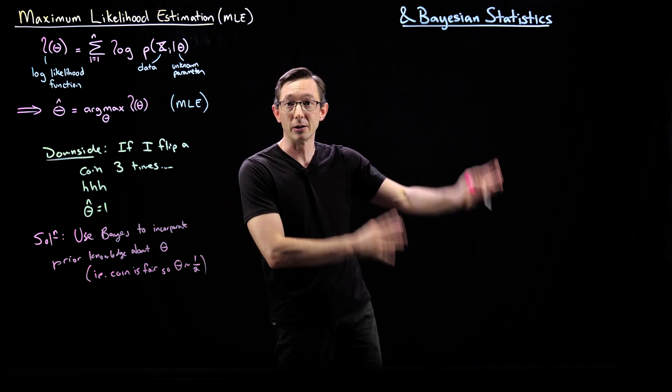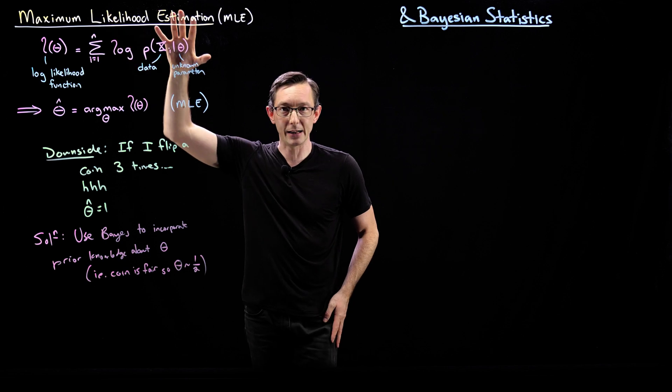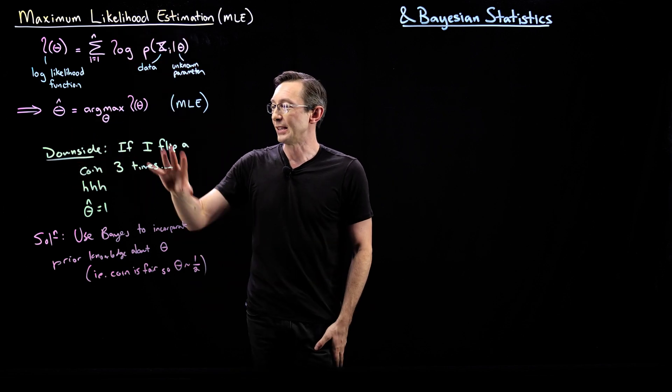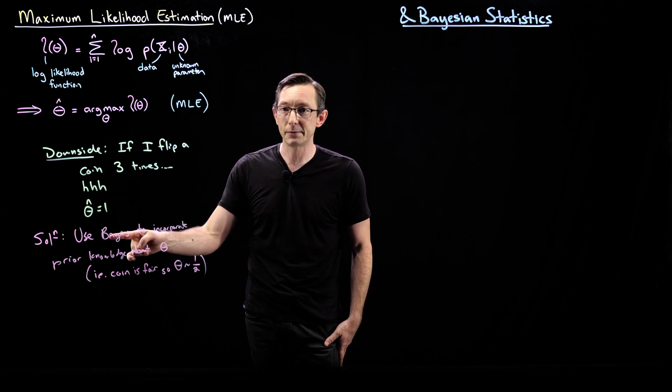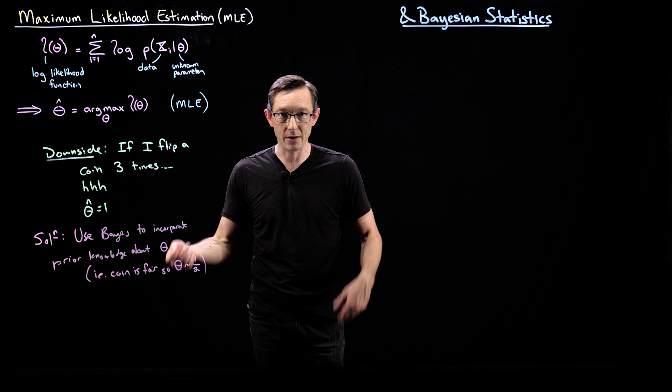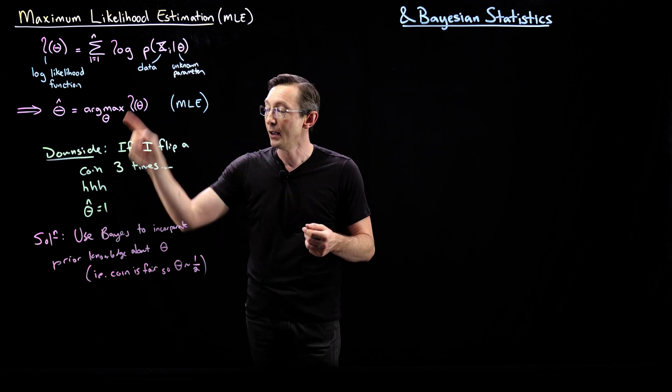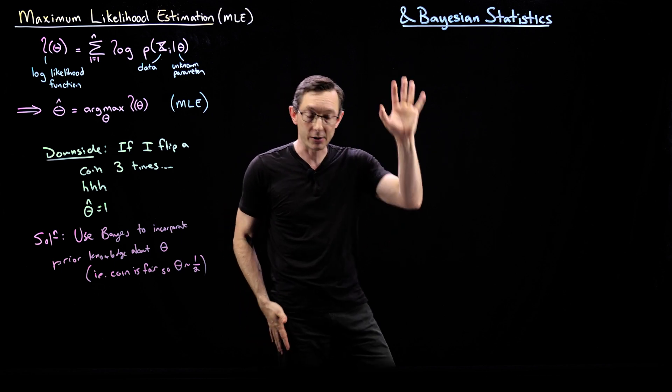That's a whole deeper dive set of lectures. But the idea here is that maximum likelihood estimation has this kind of canonical fault. This is a cartoon example that shows how bad it can get. But if we use Bayes, Bayesian statistics, we might be able to incorporate some prior knowledge about theta to make it more robust to these bad, unlucky draws. So let's write down what that looks like.